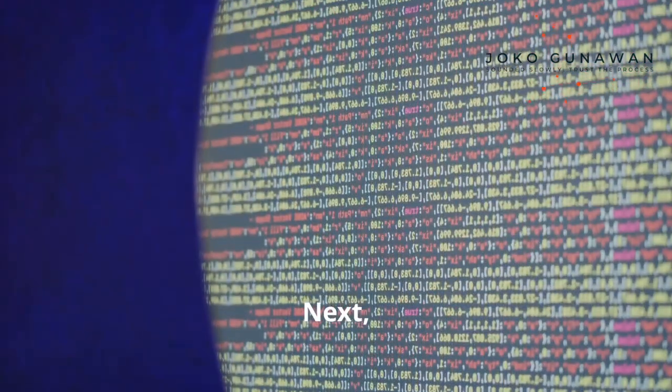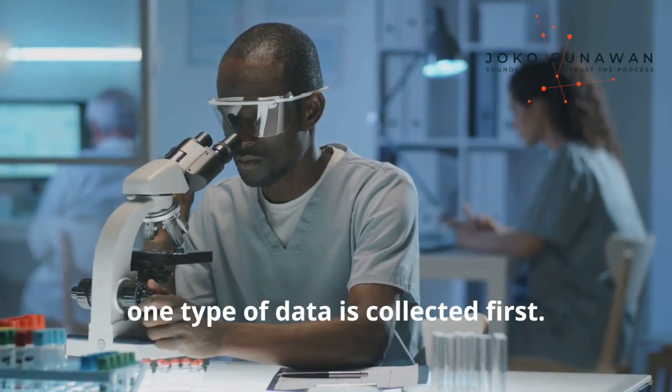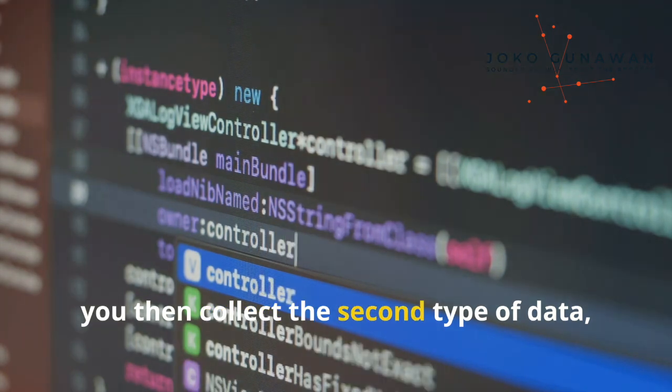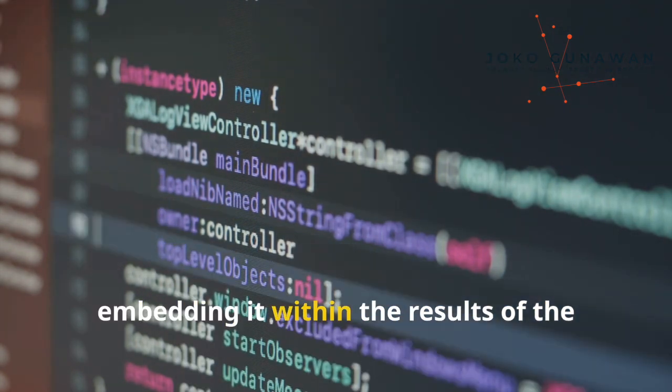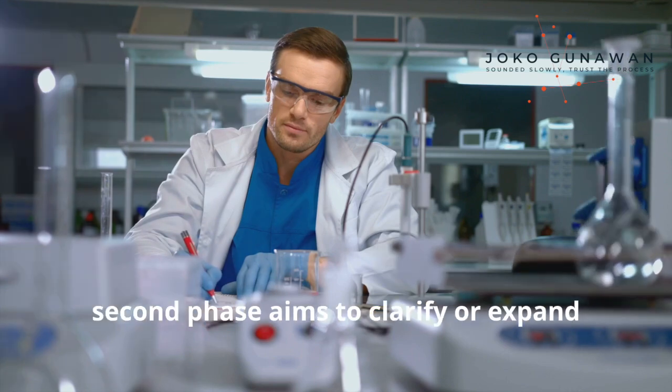Next we have sequential embedded design. In this approach, one type of data is collected first. Once you have those initial findings, you then collect the second type of data, embedding it within the results of the first phase. This is particularly useful when the second phase aims to clarify or expand upon the initial data.